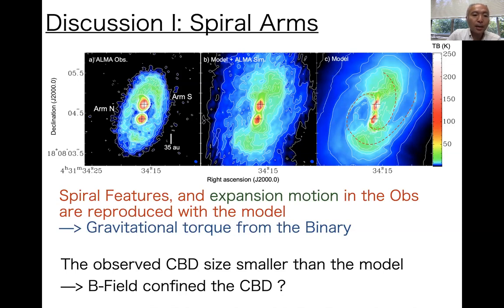On the other hand, the extent of the circumbinary disk — as you can see — the model extent is obviously larger than that of the observation. So in our model without a magnetic field, we cannot reproduce this compact signature of the circumbinary disk. One possible reason is that a magnetic field could confine the circumbinary disk.